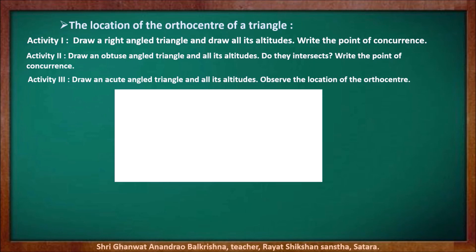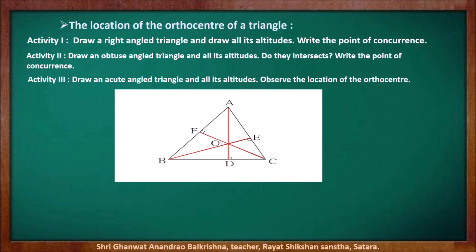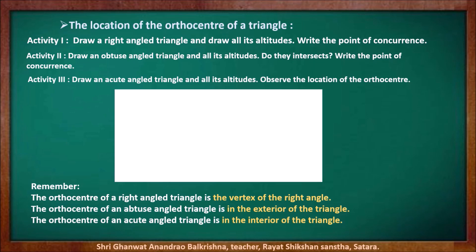For the third activity, draw an acute-angled triangle and draw all its altitudes and observe the location of the orthocenter. After doing this activity, we get altitudes shown in red, and they meet at point O, the orthocenter, which is in the interior of that triangle. So to summarize: the orthocenter of a right-angled triangle is the vertex of the right angle; the orthocenter of an obtuse-angled triangle is in the exterior; and the orthocenter of an acute-angled triangle is in the interior of the triangle.